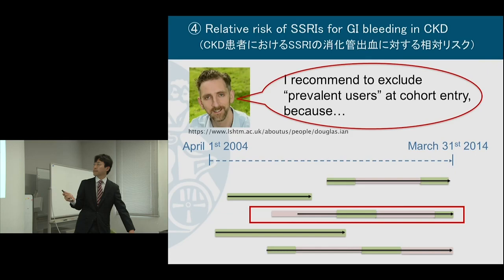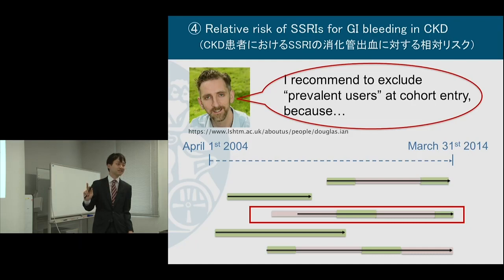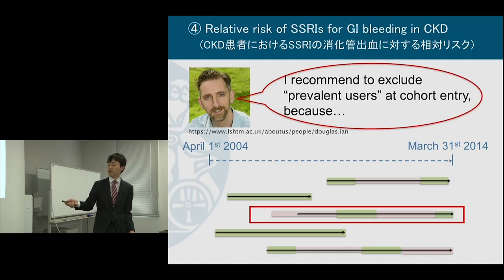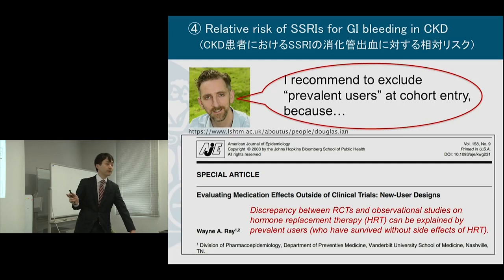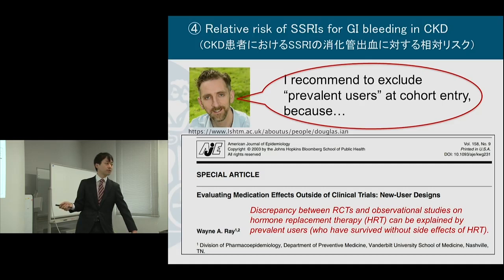Then Ian came to me with a suggestion. Generally Ian is very generous about student decisions, but this time he had a strong opinion. He said I should have excluded prevalent users at the time of cohort entry, because it's well known in pharmacoepidemiology that prevalent users can bias results. The discrepancy between RCTs and observational studies on hormonal replacement therapy can be explained by prevalent users who survived without side effects.